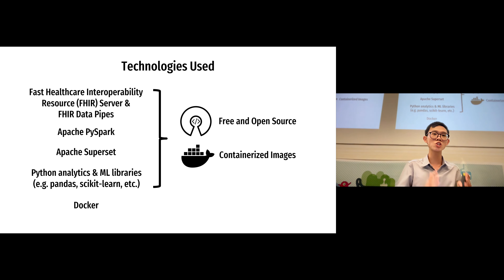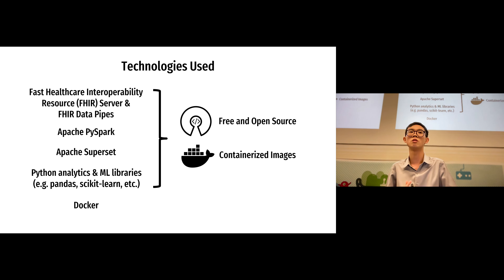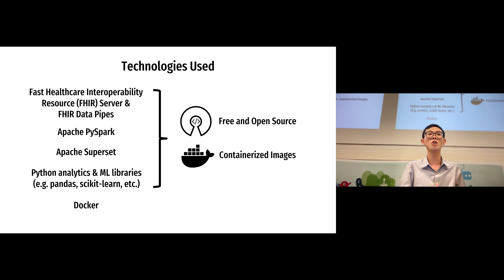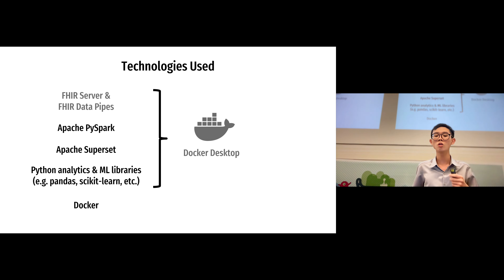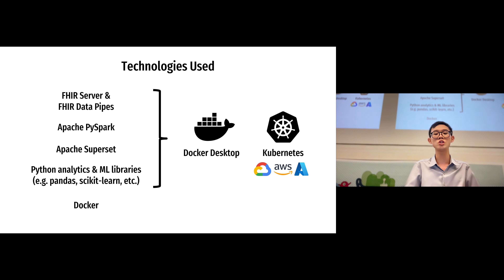Being free and open source means it is much easier for us to scale whatever we have done. This is very important because many of the things we are doing are intended for the global public healthcare sector. In many countries — including third-world countries — there are much fewer resources available. So free and open-source availability as containerized images is very important. All of our technologies can be deployed on Docker Desktop on-premises, as well as on the cloud using technologies like Kubernetes and AWS Elastic Compute Service.